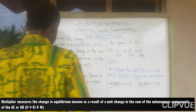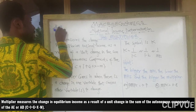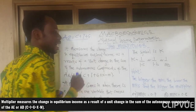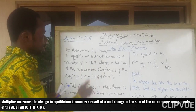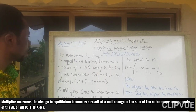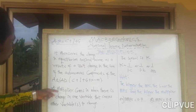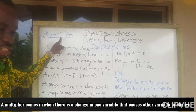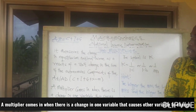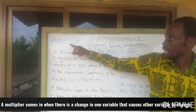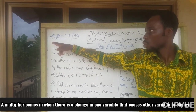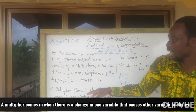From our previous lessons, we understood that aggregate expenditure is equal to consumption plus investment plus government spending, whereby the economy is closed. So we are focusing on the closed economy. In mathematics, if any of these components changes, the aggregate expenditure is automatically going to change, meaning that changing one component will automatically cause the aggregate expenditure or the national income equilibrium to also change.